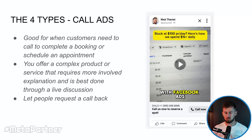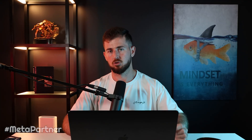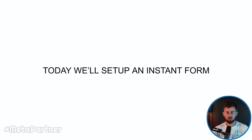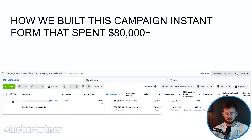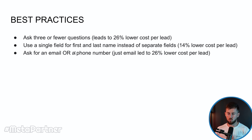Now that you know the four types of lead ads you can run on Meta, let's actually build one out together. Today we'll set up an Instant Form campaign. This will basically replicate a campaign we spent $82,000 on, generating over 7,000 leads at an $11 cost per lead. A couple of best practices before we get into setup: asking three or fewer questions can get you a 26% lower cost per lead.